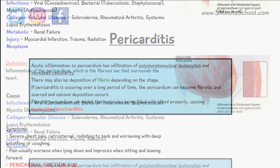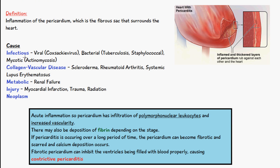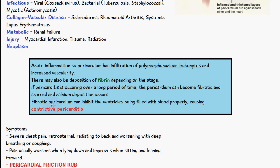Pericarditis works by the etiology resulting in acute inflammation in the pericardium. We have infiltration of polymorphonuclear lymphocytes and increased vascularity. Later on, deposition of fibrin can occur, and if pericarditis persists over a long period of time, the pericardium can become fibrotic and scarred, with calcium deposition as well.